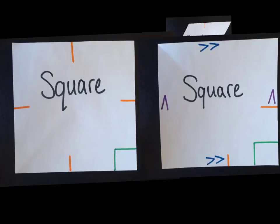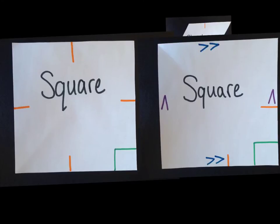The advantage of the second definition is that it can be a nuisance to calculate side lengths, so you only have to do it for two sides — but it does mean you have to find more slopes. With the first definition, if you prefer finding side lengths, you can find all four sides and then only calculate two slopes to show the right angle. So whichever you like better, both definitions are good.